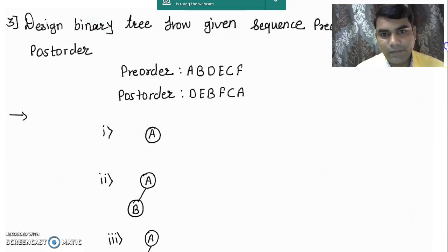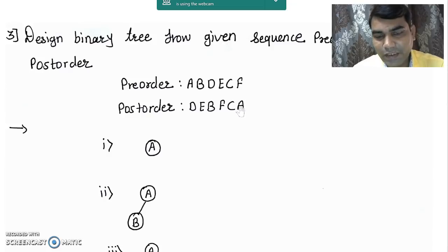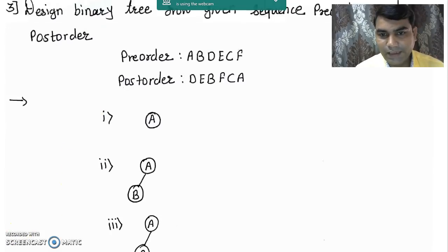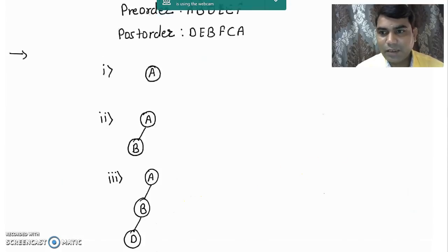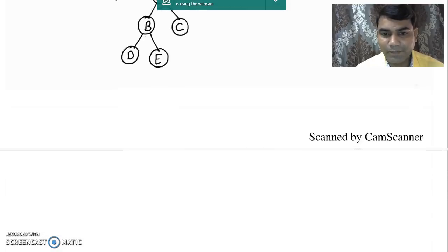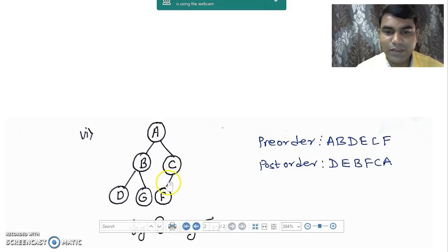Now we take the next element after C from the pre-order sequence, that is node F, and check it into the post-order sequence where it appears. If it appears before A it means it is part of the root node A. It appears immediately before C, meaning it is part of node C. If we check in step number 5, node C does not have any left and right child here. It means the coming element F must be placed to the left hand side of node C. So in this diagram we draw F towards the left hand side of node C.